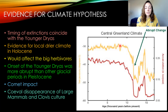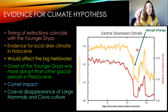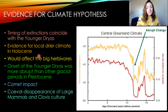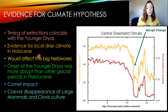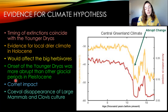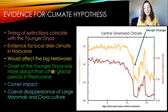What is the evidence for the climate hypothesis? A graph shows the Younger Dryas drop in temperature, and the abruptness of this change could have played a role in causing extinctions. The timing of extinctions coincides with the Younger Dryas, giving another temporal relationship. There is also evidence for a locally drier climate in the Holocene than in the Pleistocene, which may have been more detrimental to large herbivores than previous cooling events.